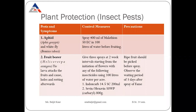Now plant protection of tomatoes. There are attacks by insect pests, many diseases, and some disorders. The insects that attack tomato include aphid (scientific name Aphis gossypii) and whitefly (scientific name Bemisia tabaci). To control aphids and whitefly, we can spray Malathion at the rate of 400 ml.